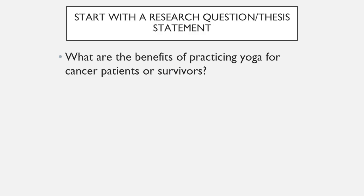The first step in the research process is always going to be coming up with something to research. This typically starts by identifying a topic that you are interested in learning more about. This can be done for you by way of assignment for a specific class, it can be something that you are just interested in, or it can be based on what is often referred to as an instancing source, like in this case where I've developed a research question related to the content of the article about yoga's benefit to cancer patients, which was discussed in the previous lecture.